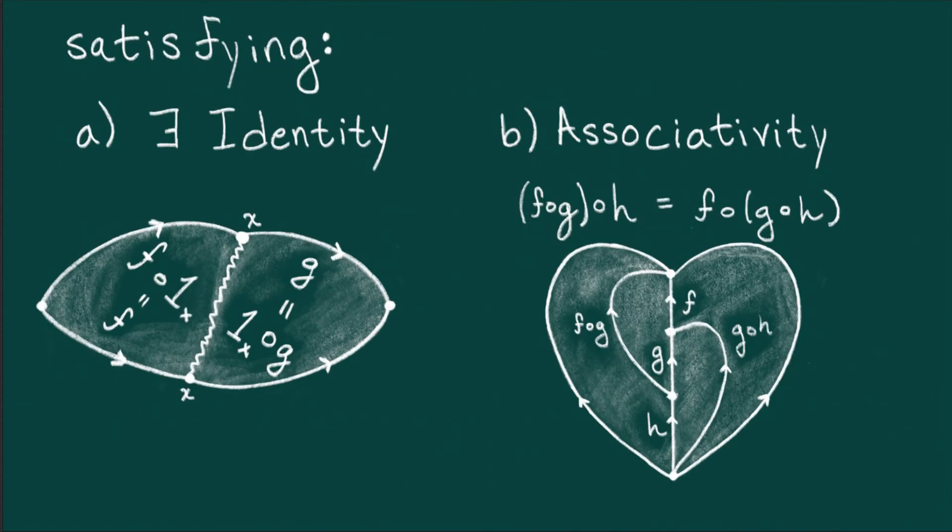The first is that every object has an identity map starting and ending at set object, whose composition with another map returns the map you started with. Think 6 times 1 equals 6 equals 1 times 6.